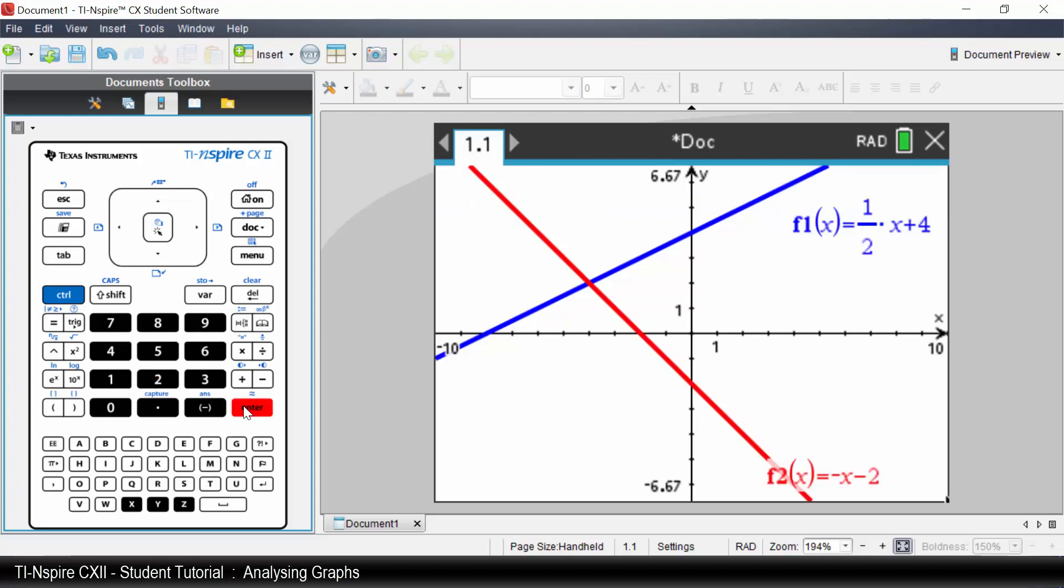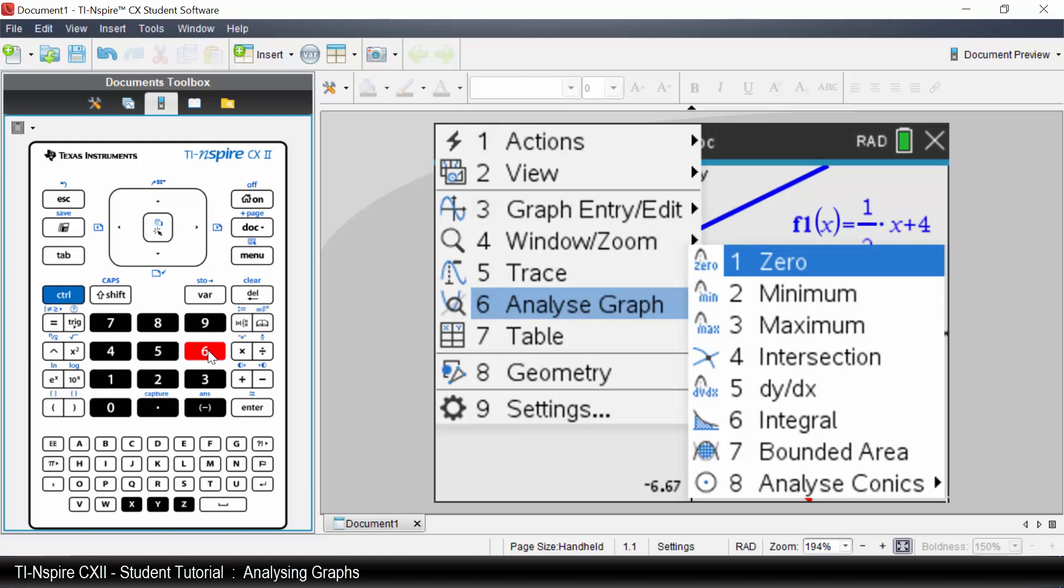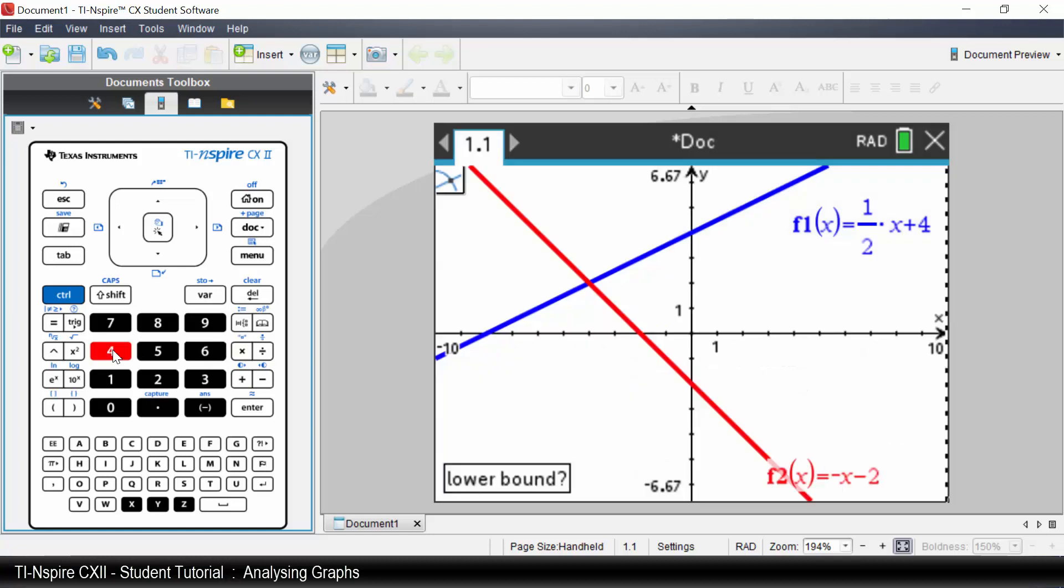The graphs intersect. To determine the point of intersection, press menu. Select Analyze Graph. Select Intersection. I will show you two methods to determine the point of intersection.